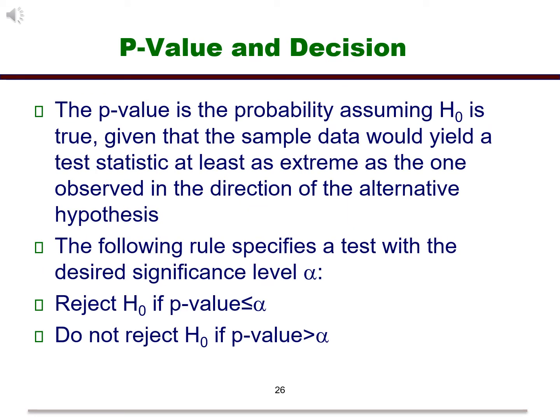The p-value is the probability assuming H0 is true, given that the sample data would yield a test statistic at least as extreme as the one you observed in the direction of the alternative. We will reject the null hypothesis in favor of the alternative if the p-value is less than alpha.